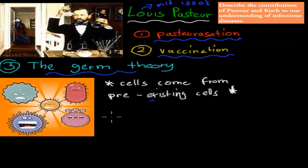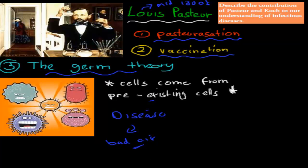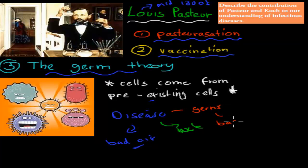We didn't used to know what actually causes disease. When it comes to disease, we used to think it might be caused by bad air - that the air itself somehow causes disease - or that you might just be unlucky for whatever reason, or that God gives you disease. There were all these theories which weren't grounded in science because we didn't know enough back then. But when Pasteur came along, he linked disease to the idea of germs, and in particular these bad germs which are the pathogens.